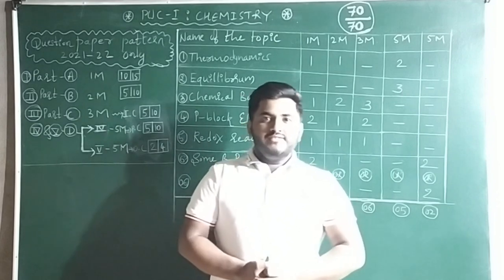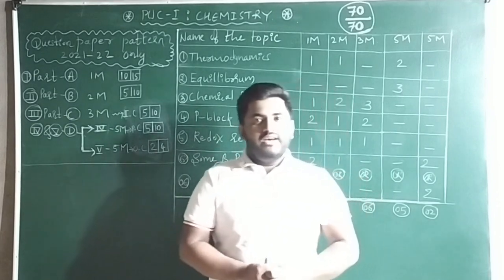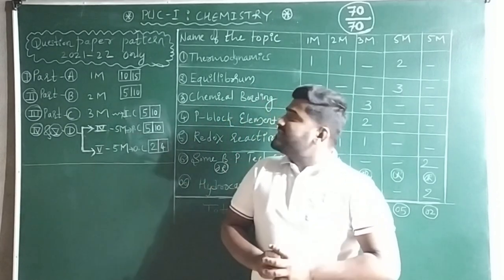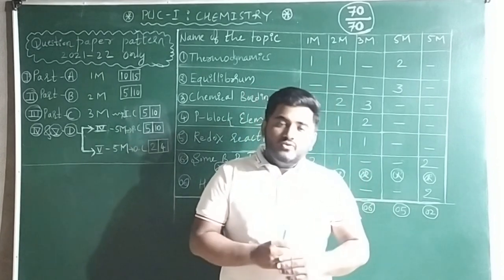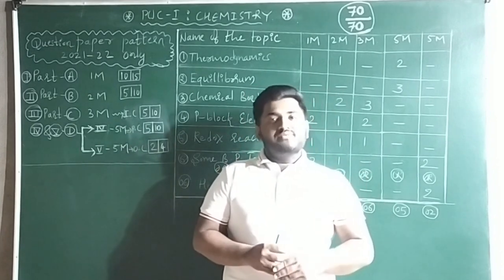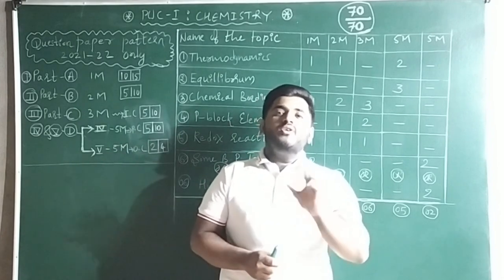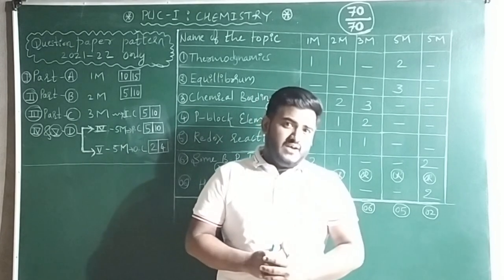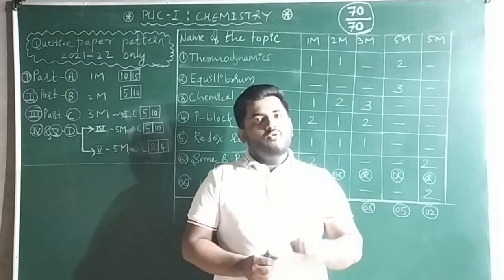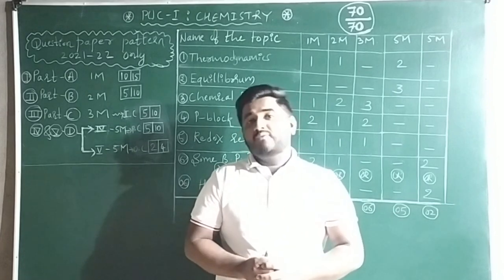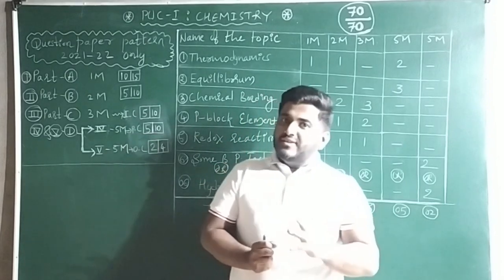Good morning, my dear friends. Welcome to Tanali Farshala. In today's class, we are going to discuss how to score 70 out of 70 marks in chemistry by studying only six chapters out of 13 to 14 chapters. You can study only six chapters and still get 70 out of 70 marks.